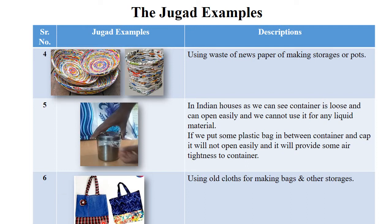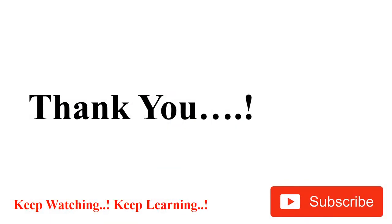The next example is old clothes. You can use old clothes for making bags and other storage items. There are different shops that use old clothes to provide particular bags or storage areas. So these are some Jugaad examples. You need to also search for different Jugaad examples in your surrounding and mention them in the comments. You need to make a proper report regarding this particular assignment.